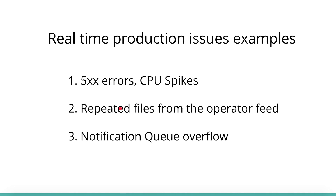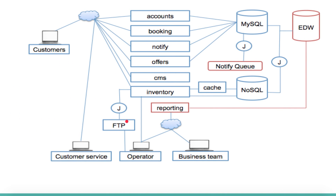The second real-time issue is repeated file feeds from operators. You've provided FTP as an option, and it goes into the inventory — but what if an operator keeps sending the same file throughout the day? We need a mechanism to validate that. A repeated file will clog our FTP server. We can't control the operator, but we can ignore those files and inform the operator that they are sending repeated files and that their inventory will not be updated if they keep doing it. Your validation engine catches this and sends an alert notification to the service delivery or operations team so they can take action.